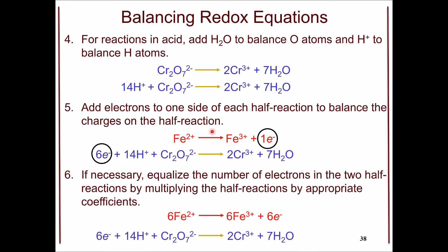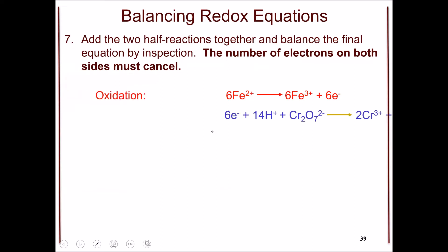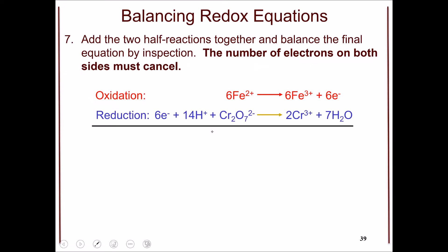These are the balanced equations for the two half reactions. We can simply add those two half reactions together to get the final balanced equation, ensuring the electrons on both sides cancel. When you add the oxidation half reaction to the reduction half reaction, the electrons cancel out between the two. You then add up all the species, and that gives you the total equation describing the reaction.